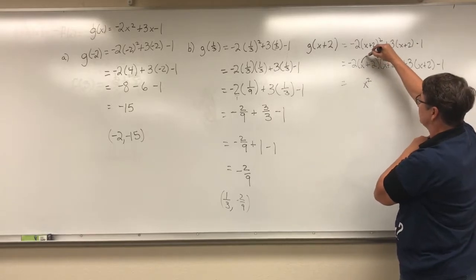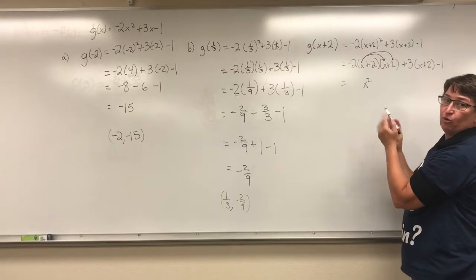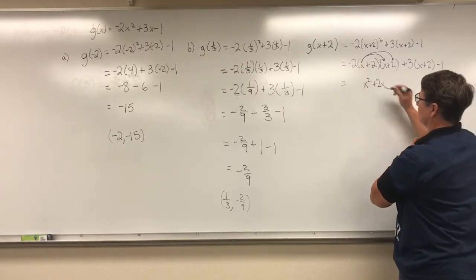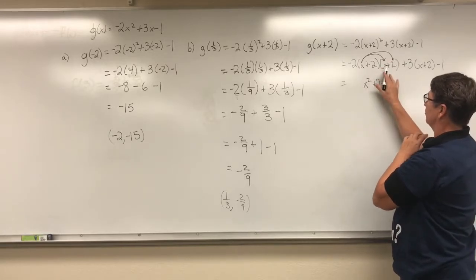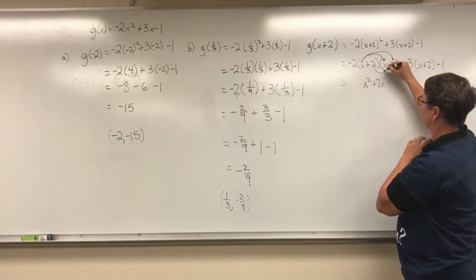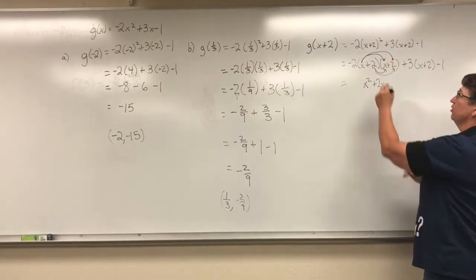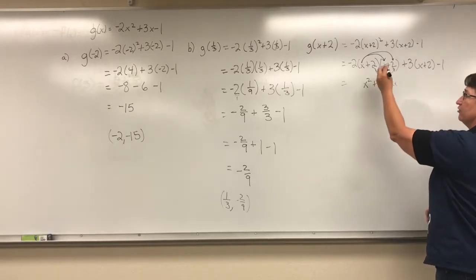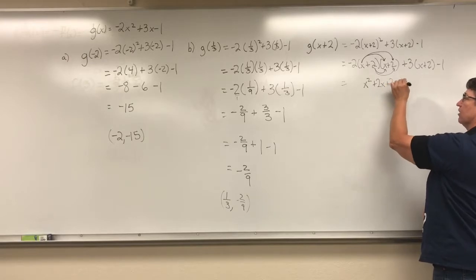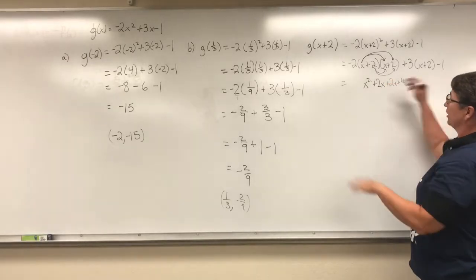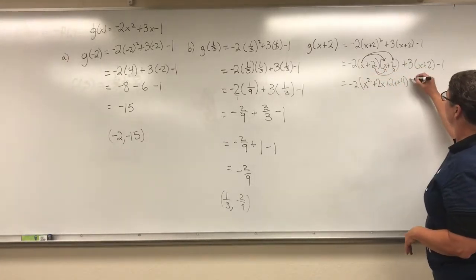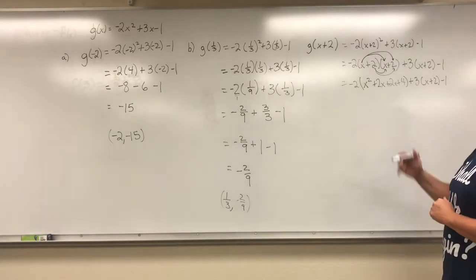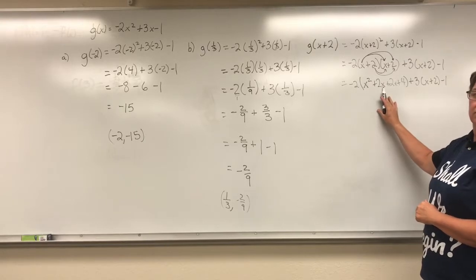Then I'm distributing, so this x is going to multiply times that 2 — in FOIL, the O stands for outside — x times 2 gives me 2x. Now I'm going to multiply the 2 times both of those and distribute it. So I do 2 times x, the inside for I, and I get 2x. And the last one times that last one gives me 4. Now everything else stays the same. So I write everything else down just the same, and now inside the parentheses I have two like terms — this 2x and this 2x are alike, so I can add those together.